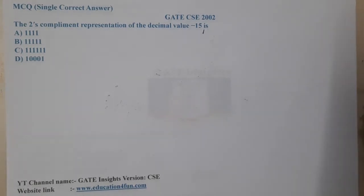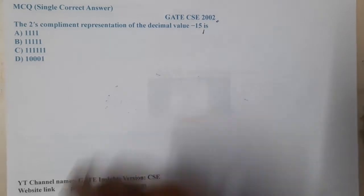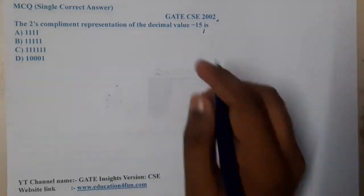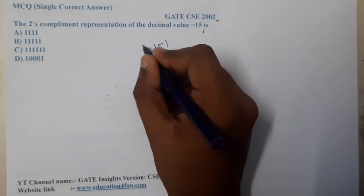Hello guys, we are back with our next lecture. In this lecture, let us go through the next question. This question belongs to GATE CSE 2002. The question is they give a decimal number minus 15 base 10 and they want to find the 2's complement.